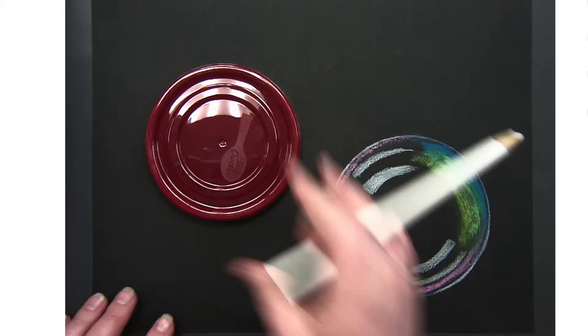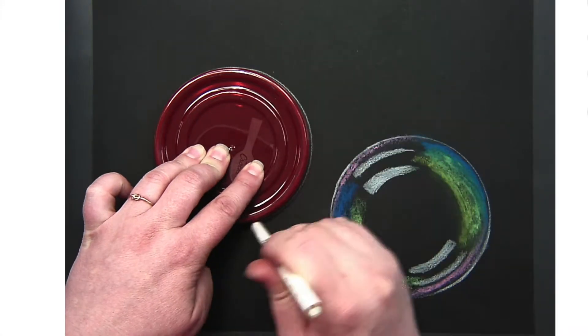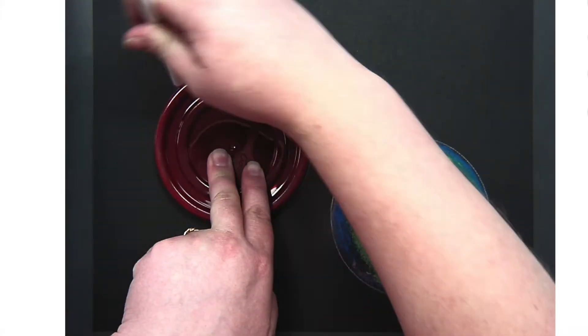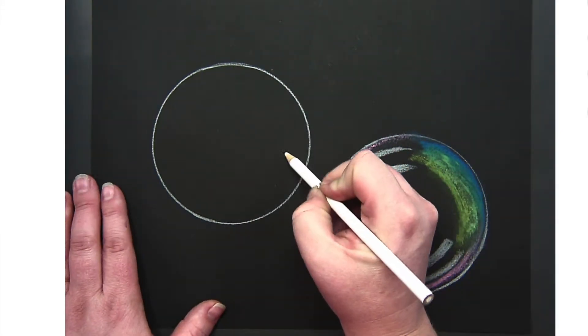For our bubble drawings we're going to need a template for a circle, or you can draw your own circle. I'm using white colored pencil to create the contour line around the bubble.